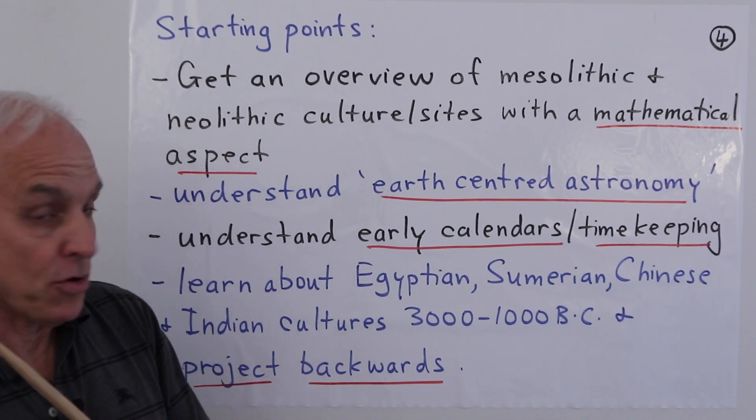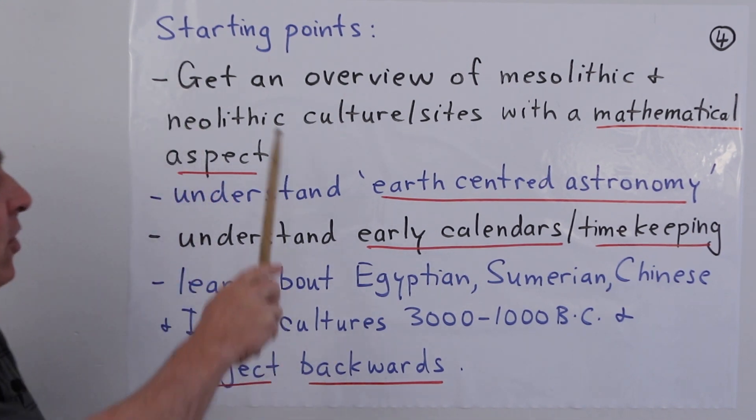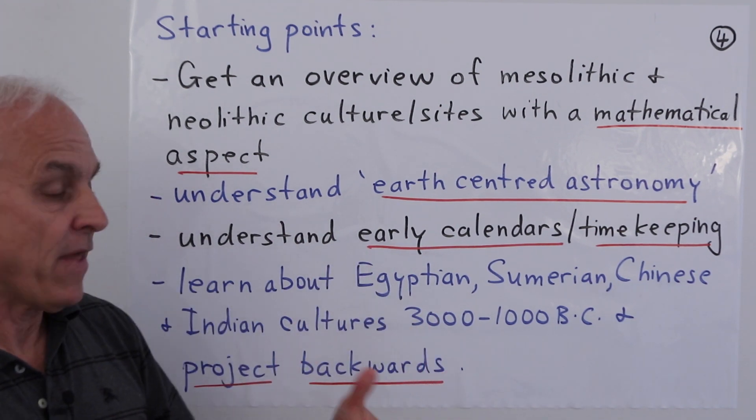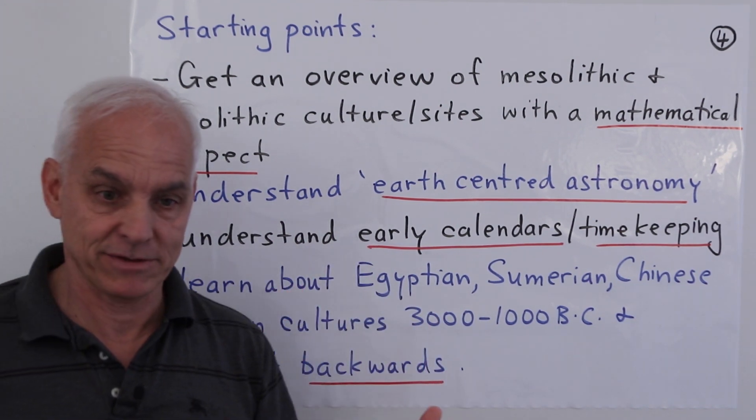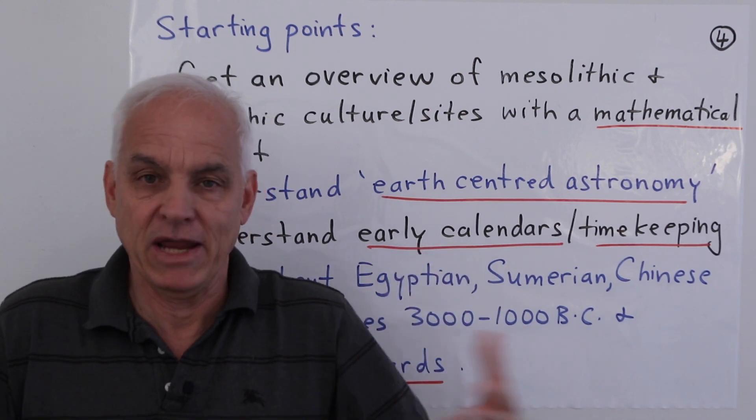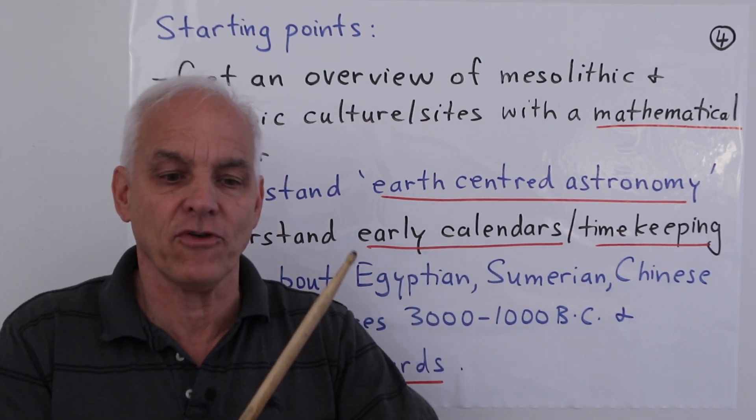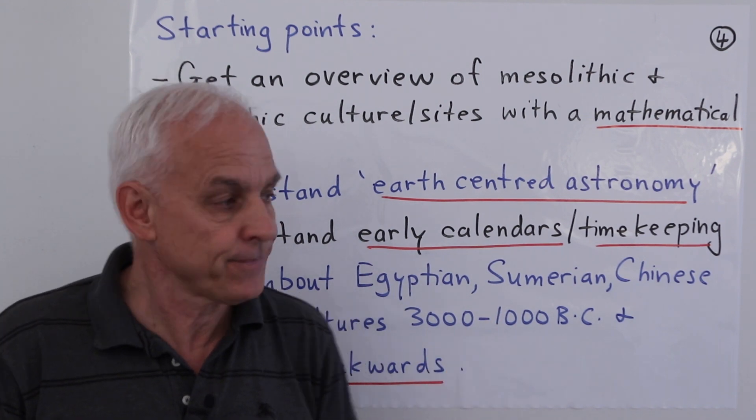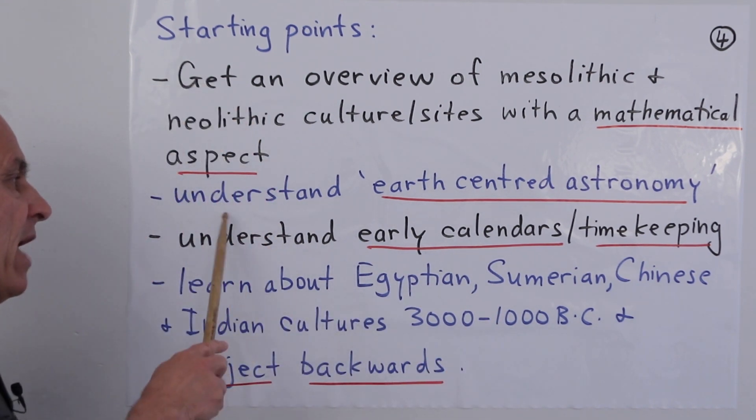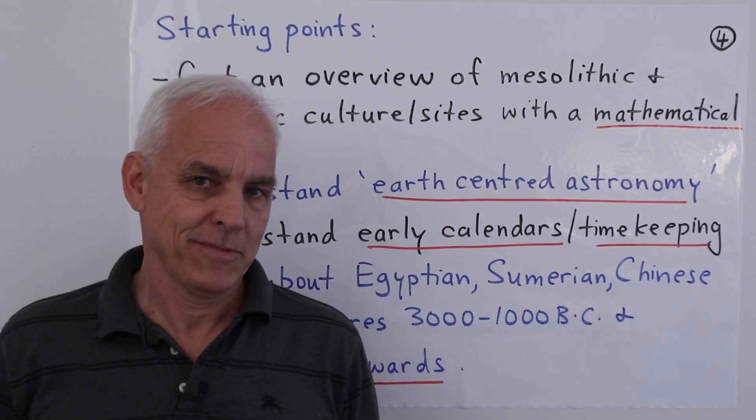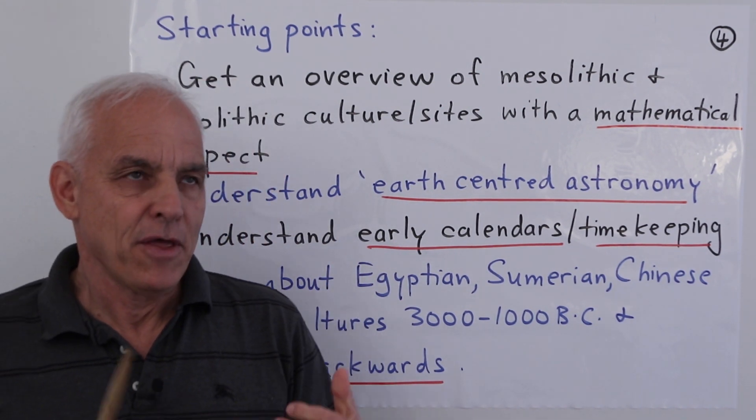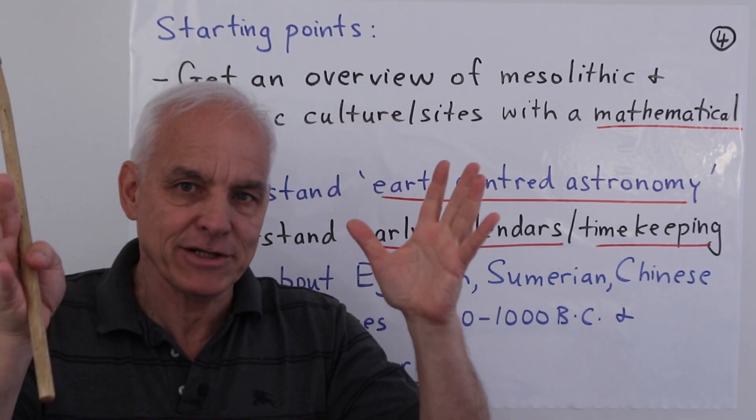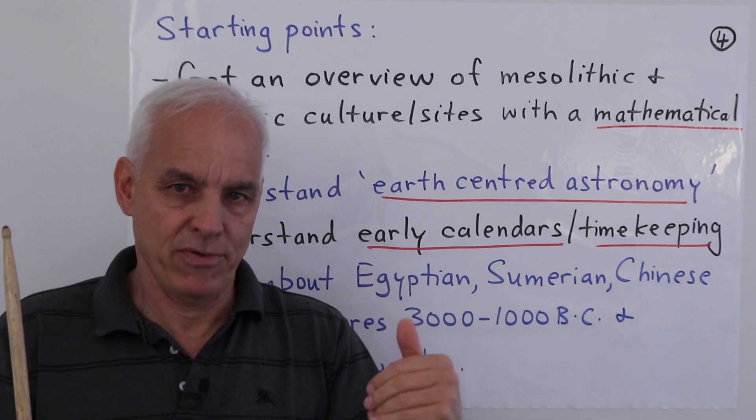How might we start such a project? I think some good places are to, first of all, get an overview of Mesolithic and Neolithic cultures and sites that have a mathematical aspect. We need to understand the major sites and what they have to offer in terms of painting a picture of the megalithic world. Then we have to understand earth-centered astronomy.